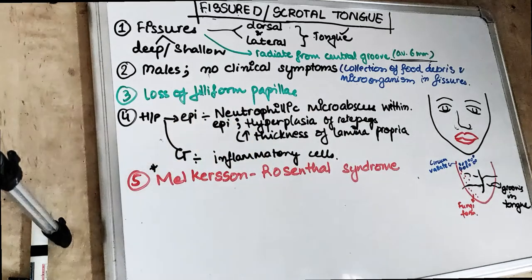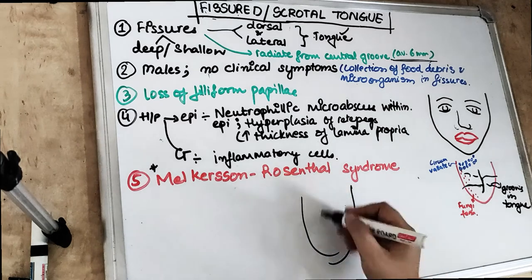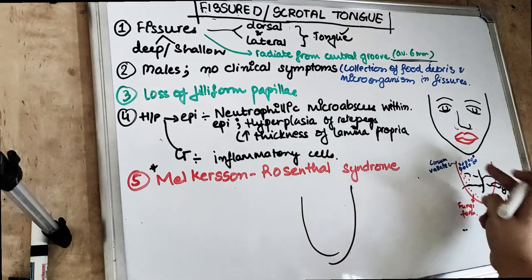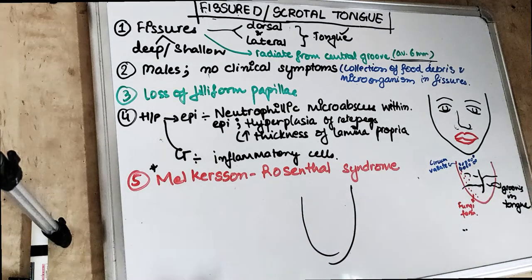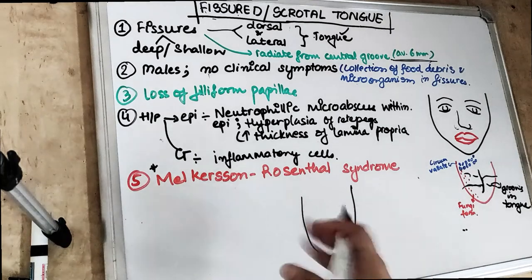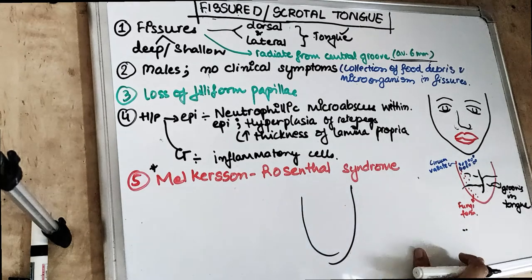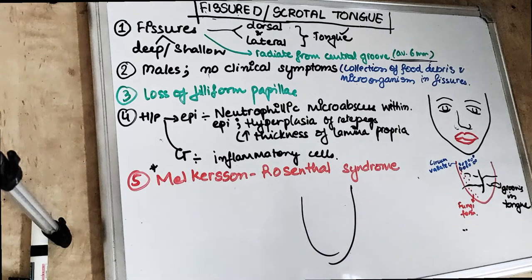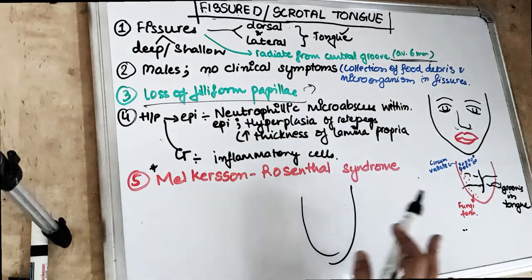There is loss of filiform papilla — the majority of papillae are filiform. The fungiform papilla, which are the red-colored ones where you can see the taste buds and which are mushroom-like, are present. However, the filiform papilla — the white-colored, keratinized, thread-like ones — are missing. So the filiform papilla, which are the majority, are lost.